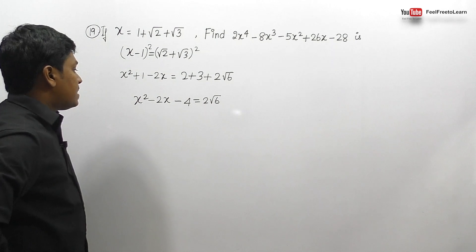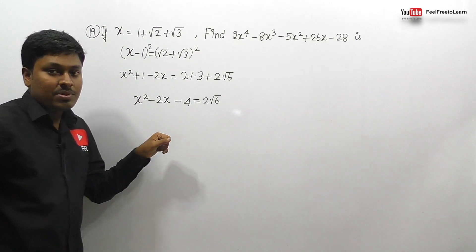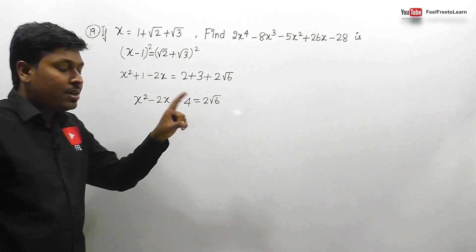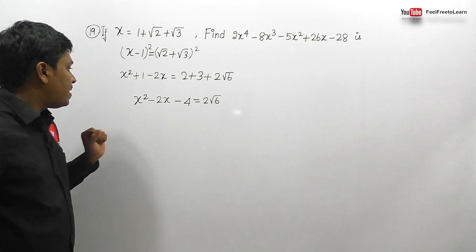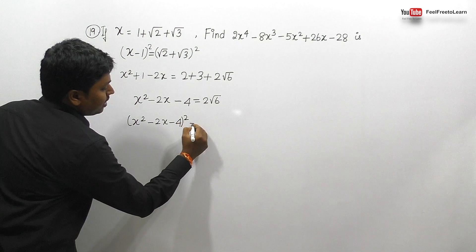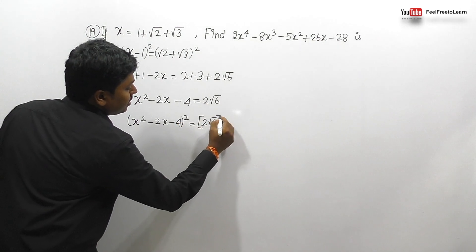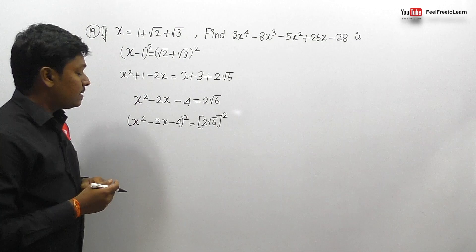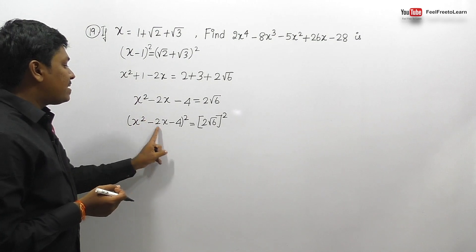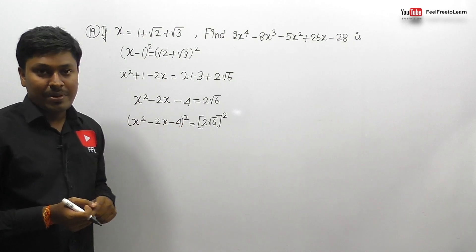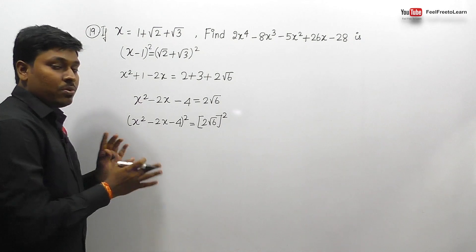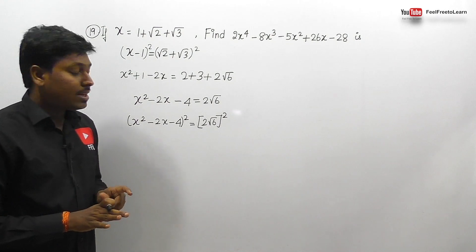We've simplified to x² minus 2x minus 4 equals 2 root 6. But we need the expression in terms of x power 4, so we need to square this expression again. The left side looks like (a+b+c)² format. Remember: (a+b+c)² equals a² plus b² plus c² plus 2ab plus 2bc plus 2ca. Without knowing formulas you can't crack algebra questions.